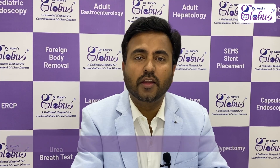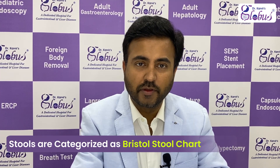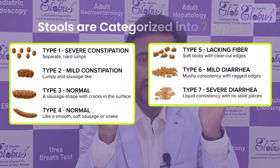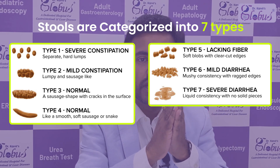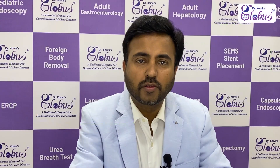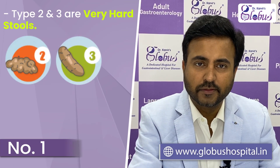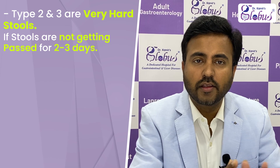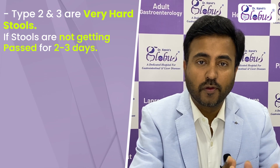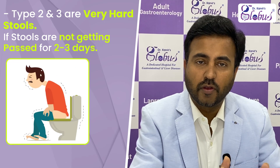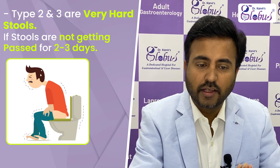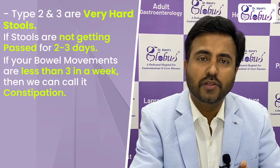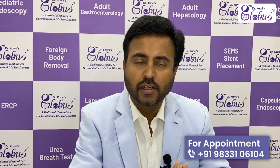When we talk about constipation, ideally stools are categorized as per the Bristol Stool Chart, which is the international stool chart. As per this chart, stools are categorized into seven categories — you can see the Bristol Stool Chart on your screen right now. If your stools are very hard, like Type 2 or Type 3, and you are not passing them for 2-3 or 4 days, that is categorized as constipation. As per the guidelines, if your bowel movements are fewer than three times a week, that is considered constipation.